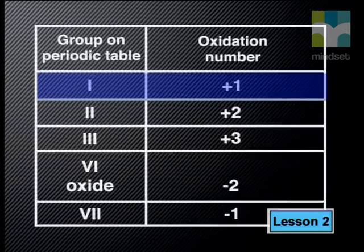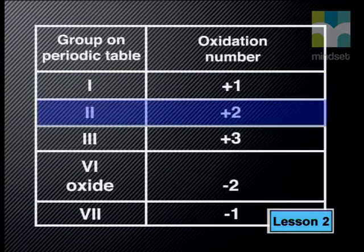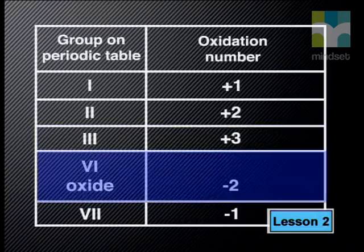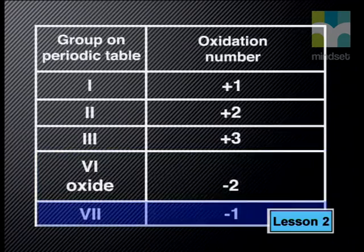All elements in group one of the periodic table have an oxidation number of plus one when they form compounds. All elements of group two have an oxidation number of plus two in compounds, and all elements of group three have an oxidation number of plus three. Oxygen is the only element of group six with a fixed oxidation number — when oxygen combines to form an oxide, it is given an oxidation number of minus two. All elements of group seven, the halogens, have an oxidation number of minus one when simple halide ions are formed. The oxidation numbers assigned by this rule correspond to the valency of the elements covered.